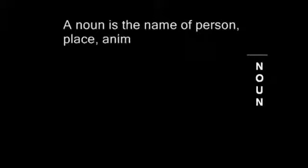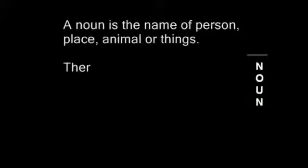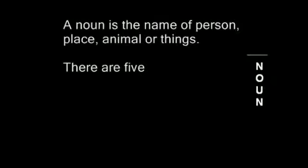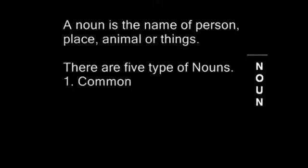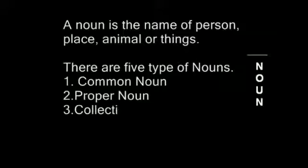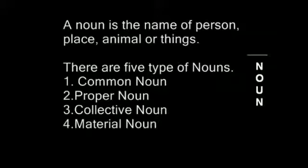Now repeat with me — a noun is the name of a person, place, animal or things. There are 5 types of nouns: 1st, common noun; 2nd, proper noun; 3rd, collective noun; 4th, material noun; 5th, abstract noun.